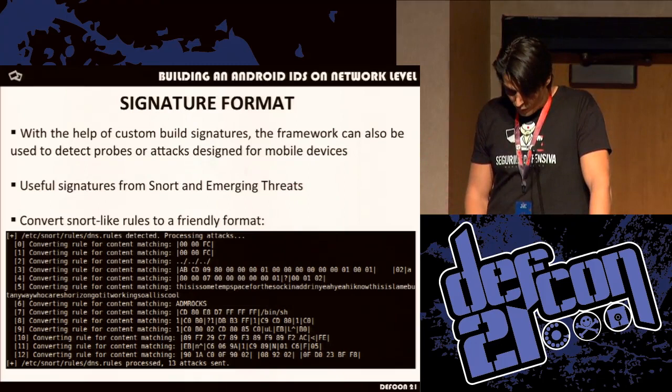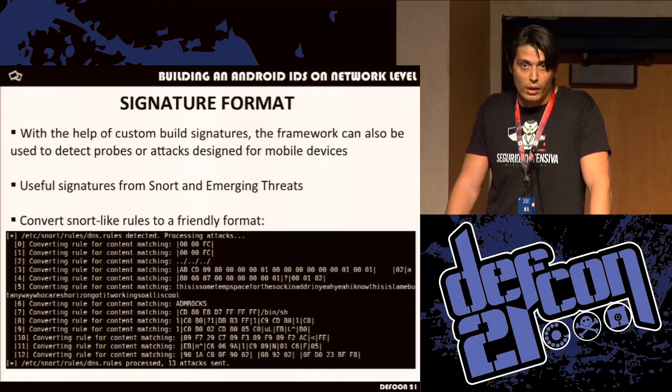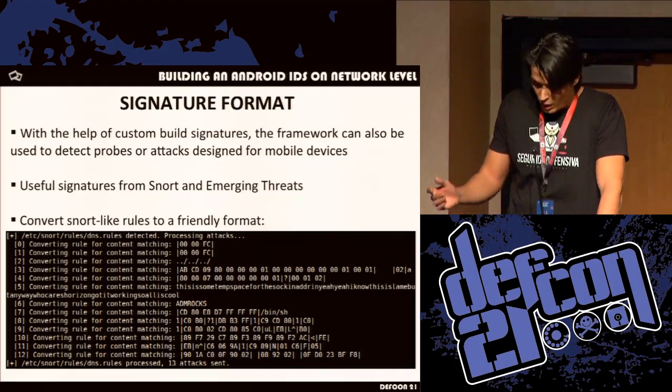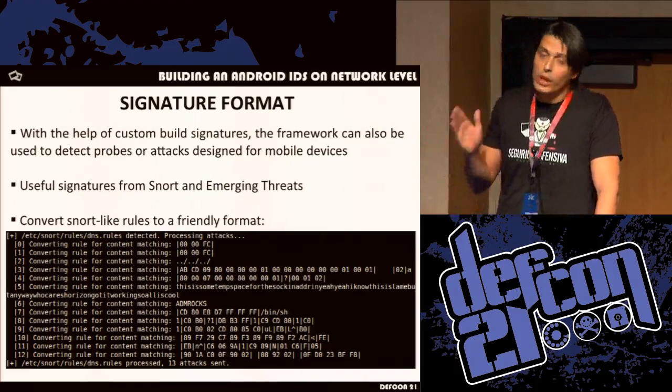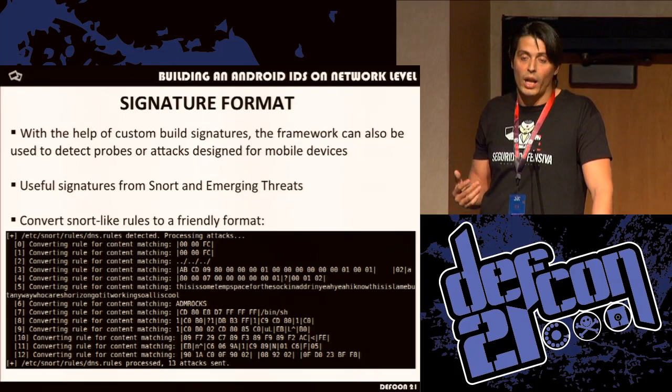Another thing I had to deal with was signatures. There are some signatures from Emerging Threats for Android, and I have to run a script to convert those rules from Snort to our format. It only converts Snort-friendly rules, and as we have seen, we can only search for a specific pattern or string in every packet. We should work with preprocessors and analyze the full flow — still working on it.